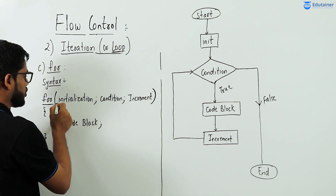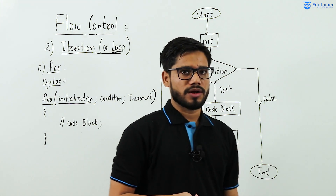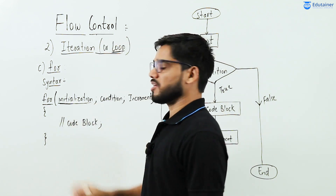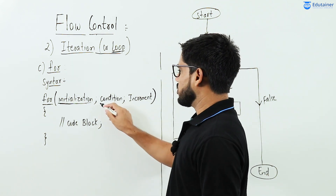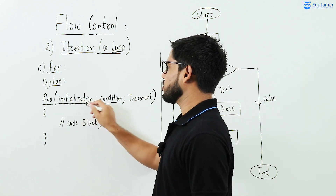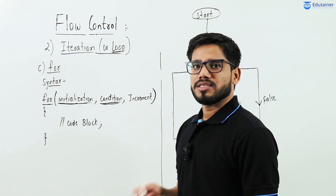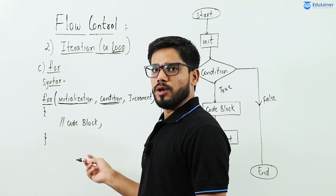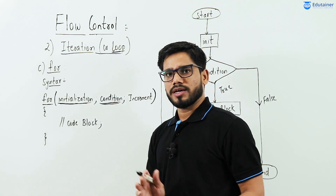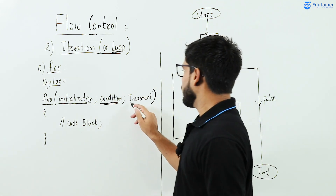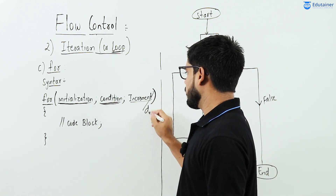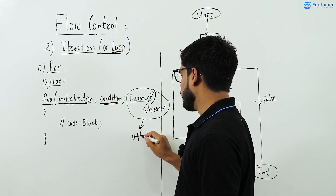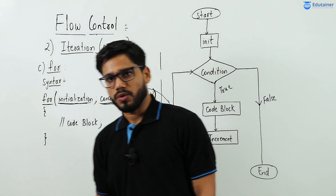Inside the bracket, we need to pass three parameters. The first parameter is initialization — here you declare and initialize the variable, provide a value to it — the variable through which you want to perform repetition. Then we apply a condition on that variable. Let's say the variable is x: int x = 0, and condition is x less than 5, so x will run from 0 to 5. The third part is increment or decrement — the updation part — where we update the variable either by incrementing or decrementing.